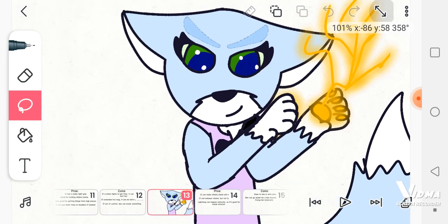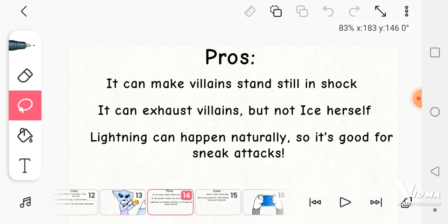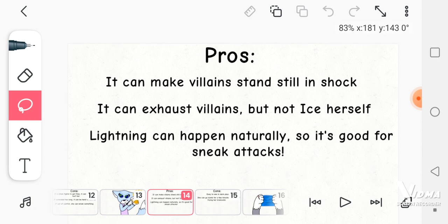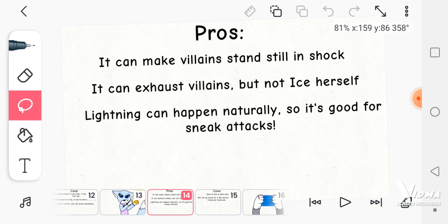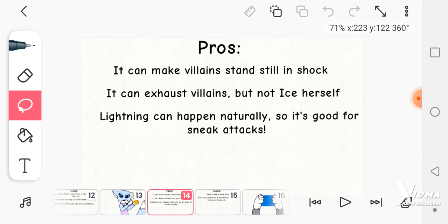Now for Ice. One, it can make the villain stand still in shock if she shocks them. Two, it can exhaust villains but not Ice herself. Three, lightning can happen naturally, so it's good for sneak attacks.